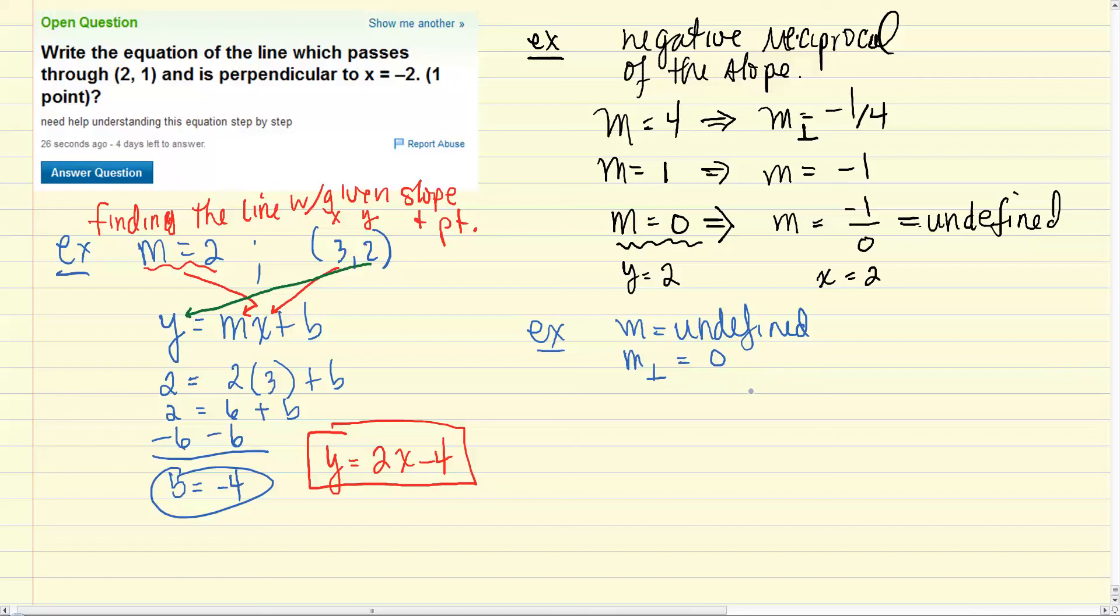So from there what we do is we use the slope of 0 along with the point (2, 1) to find the equation of the line. So we'll start off with y equals mx plus b, and then we use just like we did last time, this is our x and y, so this guy is going to go here,